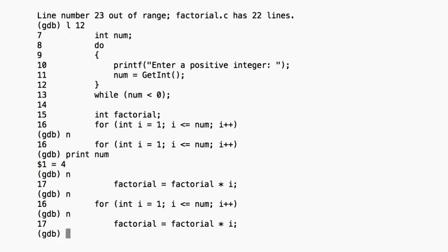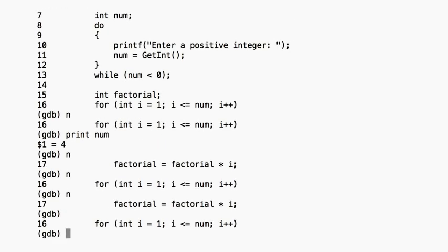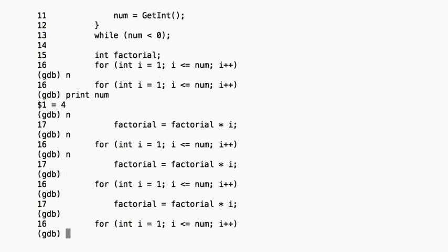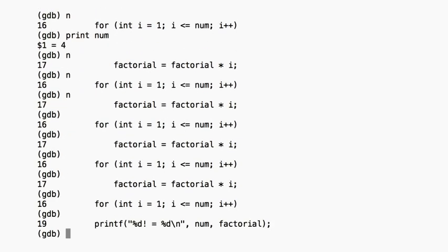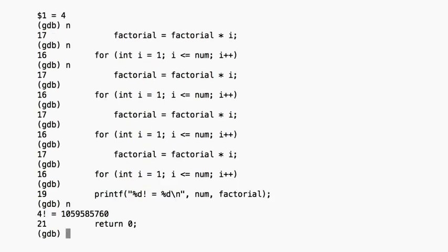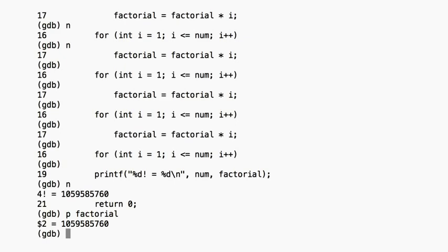Rather than typing n each time, we can also just hit enter — when you hit enter without typing anything, GDB just repeats the previous command. So now we've hit the printf call. It looks like we've gone through our for loop four times, which is what we want to do in order to multiply by 1, 2, 3, and 4. Everything seems like it's working, except when we hit next again, we get a huge number instead of 24. If we print out the value of factorial using p, we see that factorial does have this massive number in it. Something's definitely going wrong.